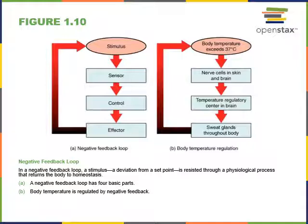The stimulus is detected by a sensor, also known as a receptor, that monitors the environment. When it detects a change, it relays that information to a control center, usually found in the central nervous system. The control center analyzes input and determines the appropriate output, sending commands to regulate an effector cell or organ. The effector carries out the response, either increasing or decreasing the level of the variable.